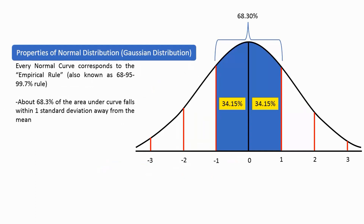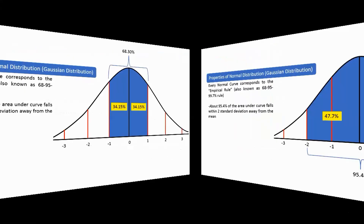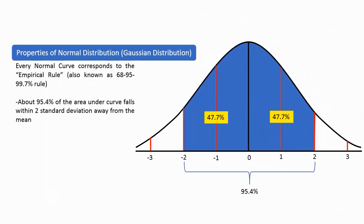Another property is that every normal curve corresponds to the empirical rule, also known as the 68-95-99.7% rule. For 68: about 68.3% of the area under the curve falls within one standard deviation away from the mean. One standard deviation to the left of zero has an area of 34.15%, and to the right also has an area of 34.15%. When combined, we get an area equal to 68.3%.